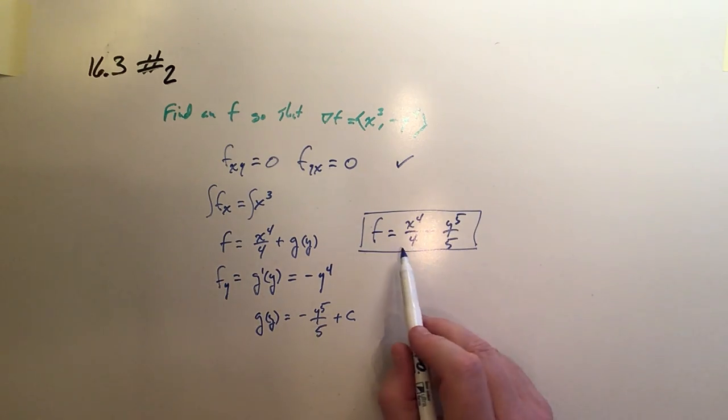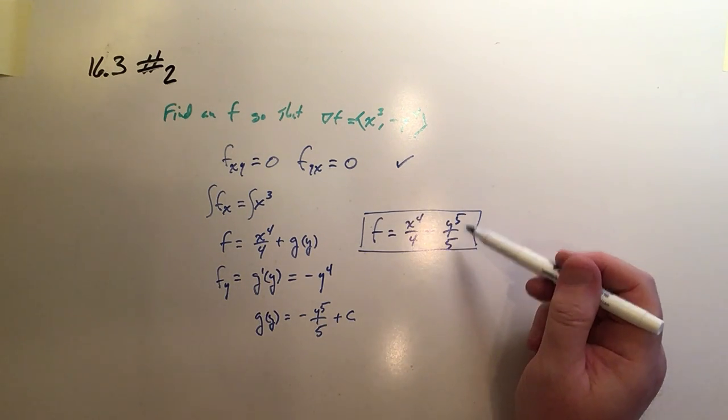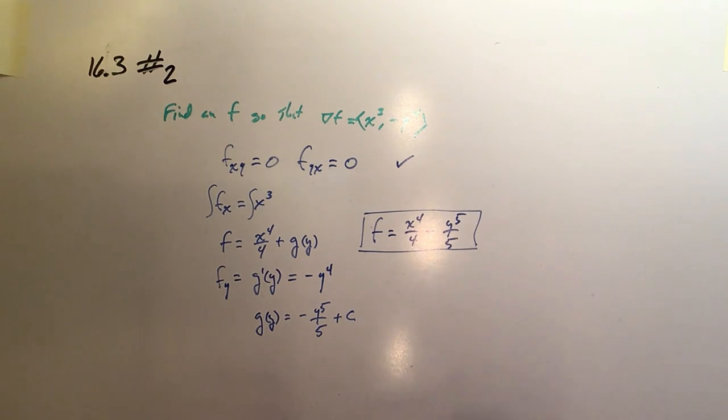And if we check it, look at this. If I take this function's partial with respect to x, I get x^3. And if I take the partial with respect to y, I get -y^4. So there it is. You can always check your answer to see that it produces the correct partials.